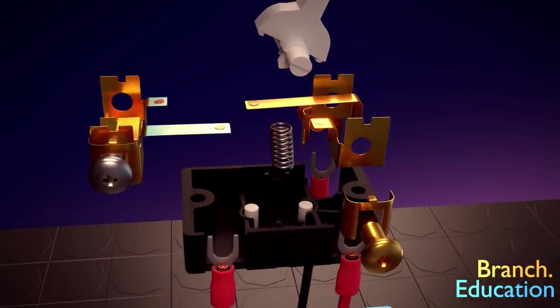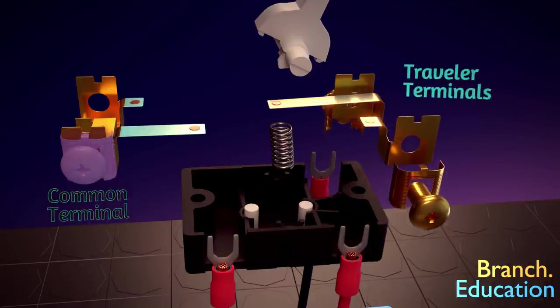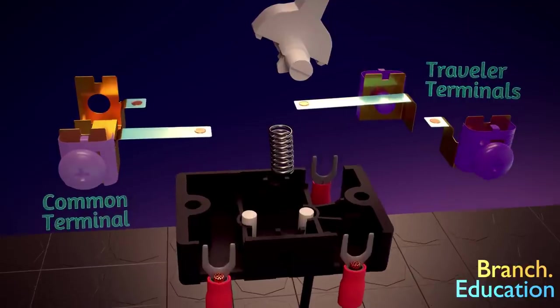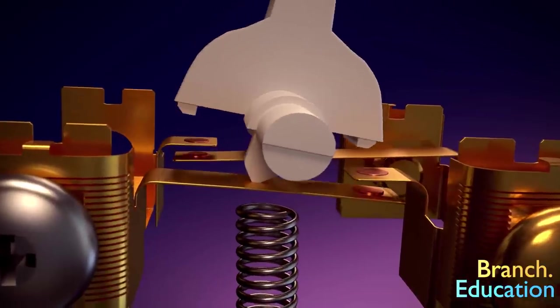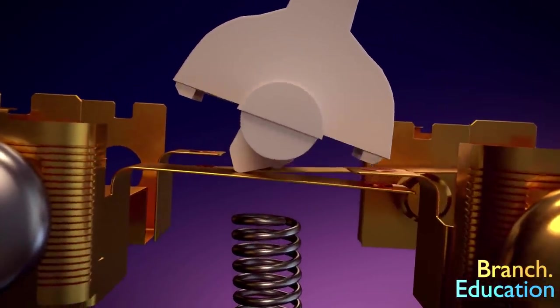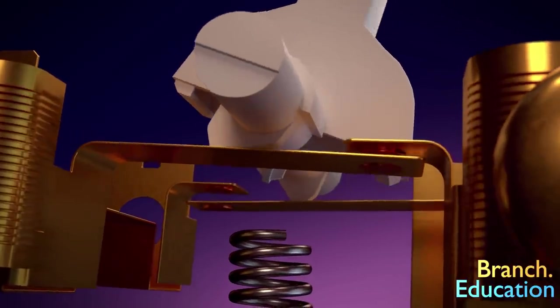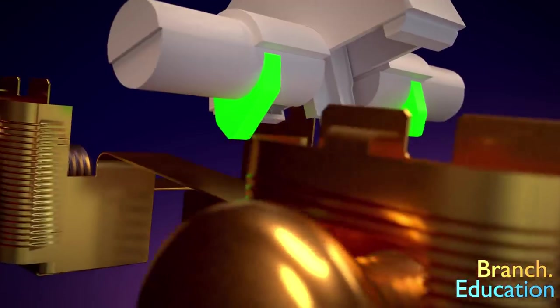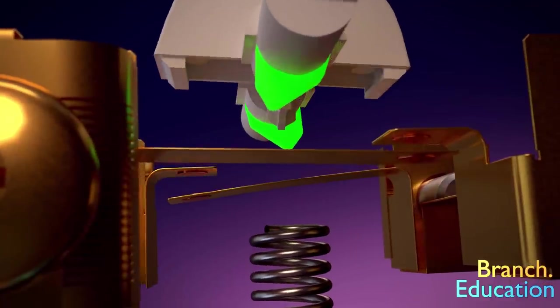Here we have a metal bar or track connected to the common terminal along with two traveler metal bars, each connected to their own separate traveler terminals. When we flip the toggle switch, one traveler is pushed away from the common by the bottom of the toggle switch, while the other traveler is in contact with the common. The shape of the bottom of the toggle is critical and makes it such that at any given time, only one traveler is in contact with the common.